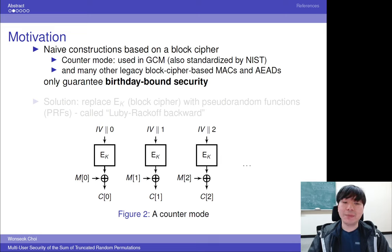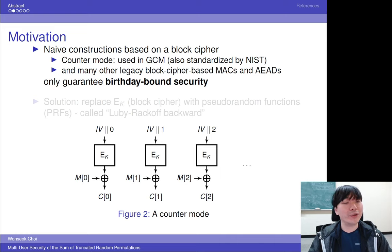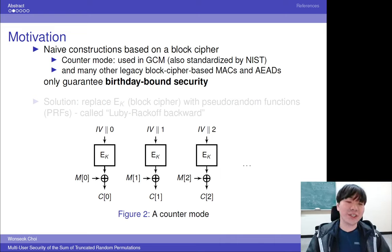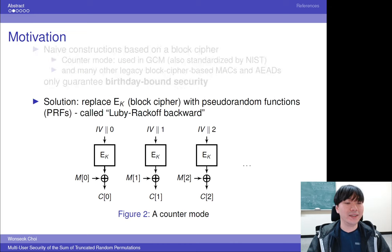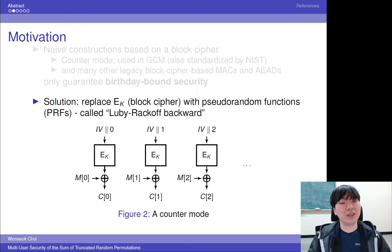Many block cipher-based constructions were proposed to handle arbitrary-length messages. For example, there is a counter mode for a mode of operation, and this is used in GCM. However, such legacy constructions only guaranteed birthday-bound security. This issue can be addressed by building pseudo-random functions from pseudo-random permutations, since block ciphers can be regarded as pseudo-random permutations.